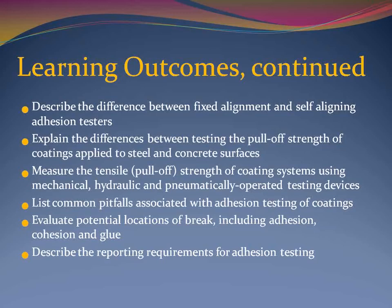You should also be competent in describing the basic difference between adhesion testers that are fixed alignment versus those that are self-aligning, explain the difference in procedures when evaluating coating adhesion on concrete versus coating adhesion on steel, measure the tensile adhesion of coatings using five different adhesion testers including one fixed alignment tester and four self-aligning testers, list common pitfalls, evaluate and document planes of separation, and describe documentation requirements. While hands-on learning cannot be done in a webinar, it is highly recommended that you practice with the instrumentation prior to actual use.